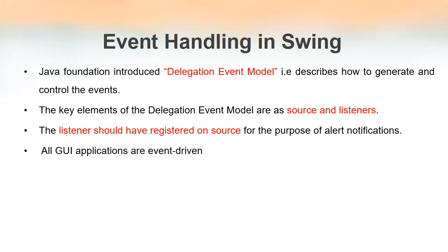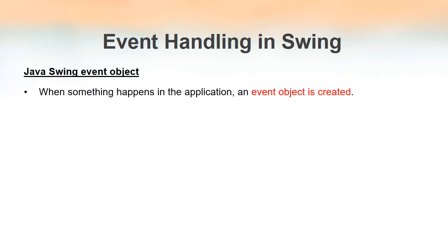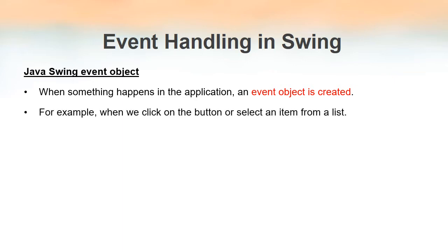If we have a graphical user interface application, that application will be conducted on the basis of events — when we click on a button, one event is generated and that event will be handled in a particular way. So all GUI applications are event-driven. When something happens in an application, it is actually an event object that is created — an object of the class that represents the event. An event will be generated when we click on a button or select an item from a list.